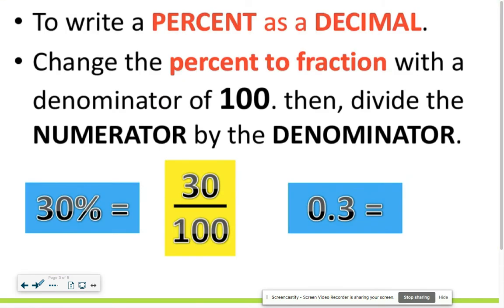To write a percent as a decimal, you are going to change the percent to a fraction with the denominator 100. Remember the word denominator is found on the bottom of a fraction, so your bottom number when you're writing a percent should be out of a hundred.